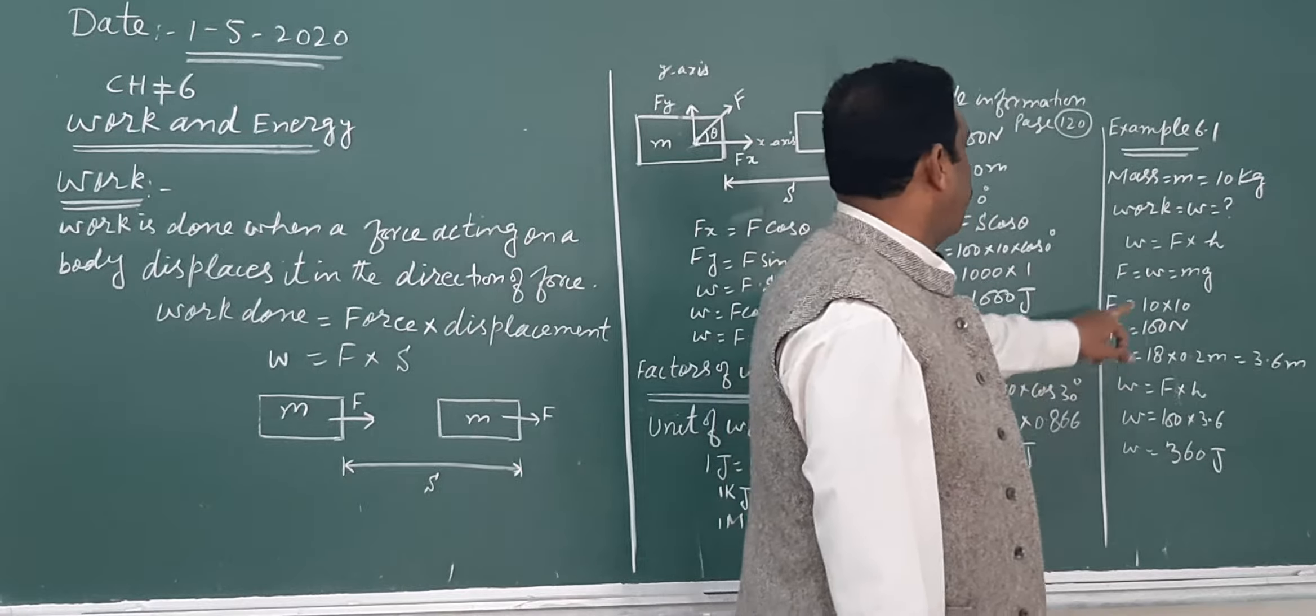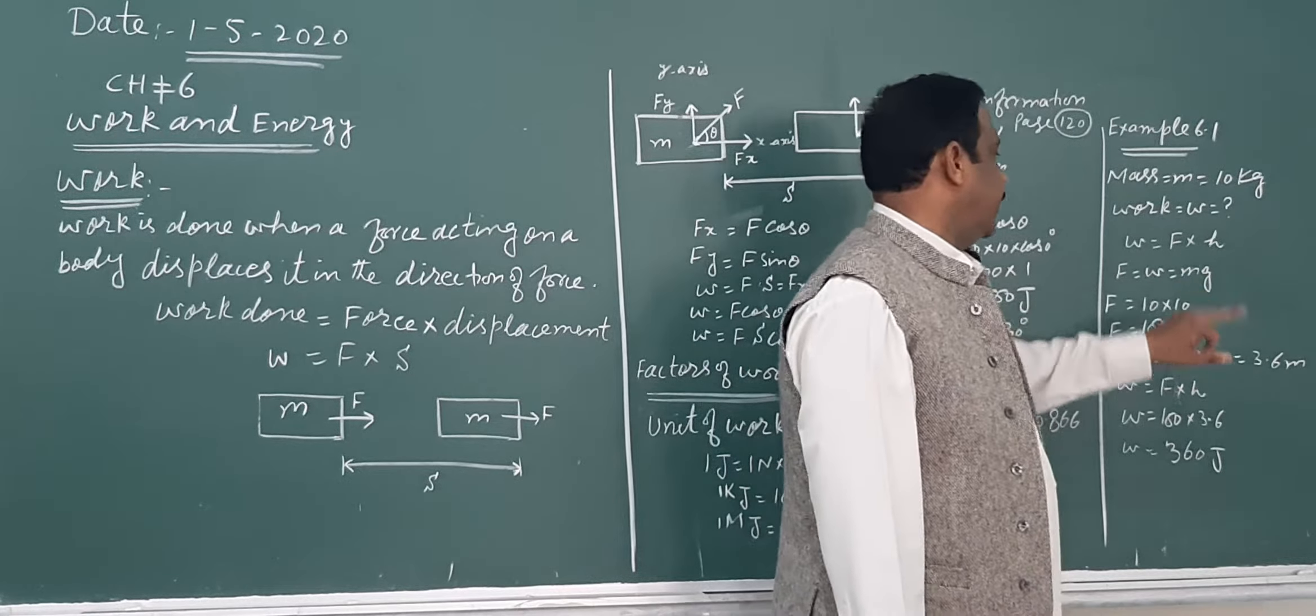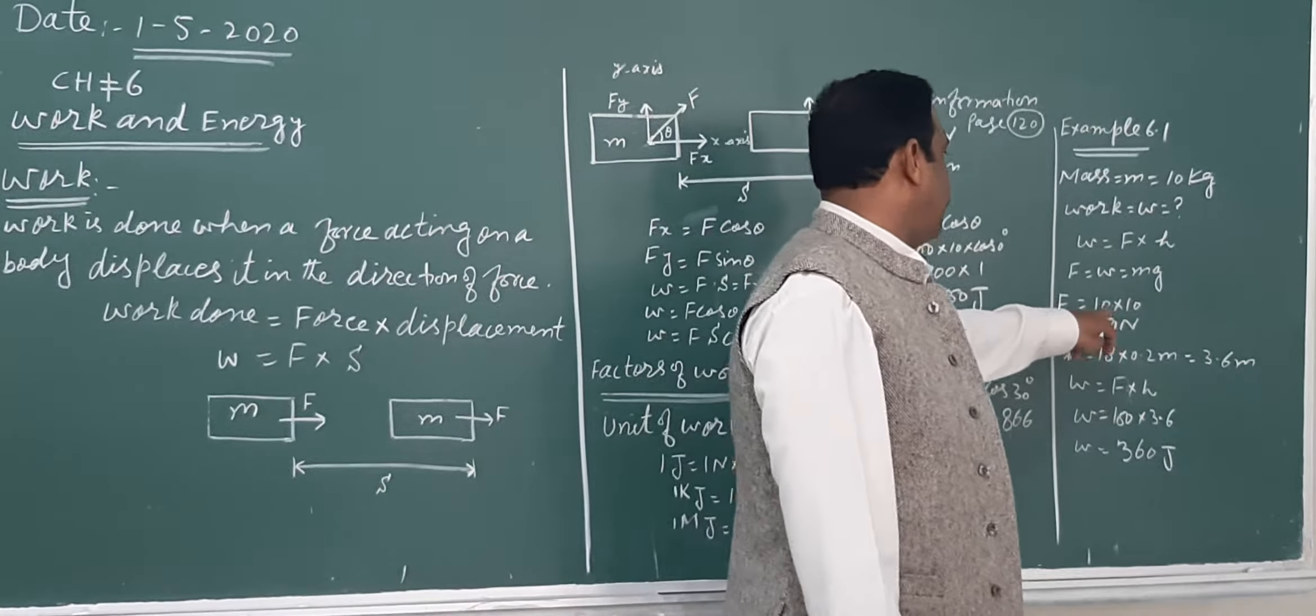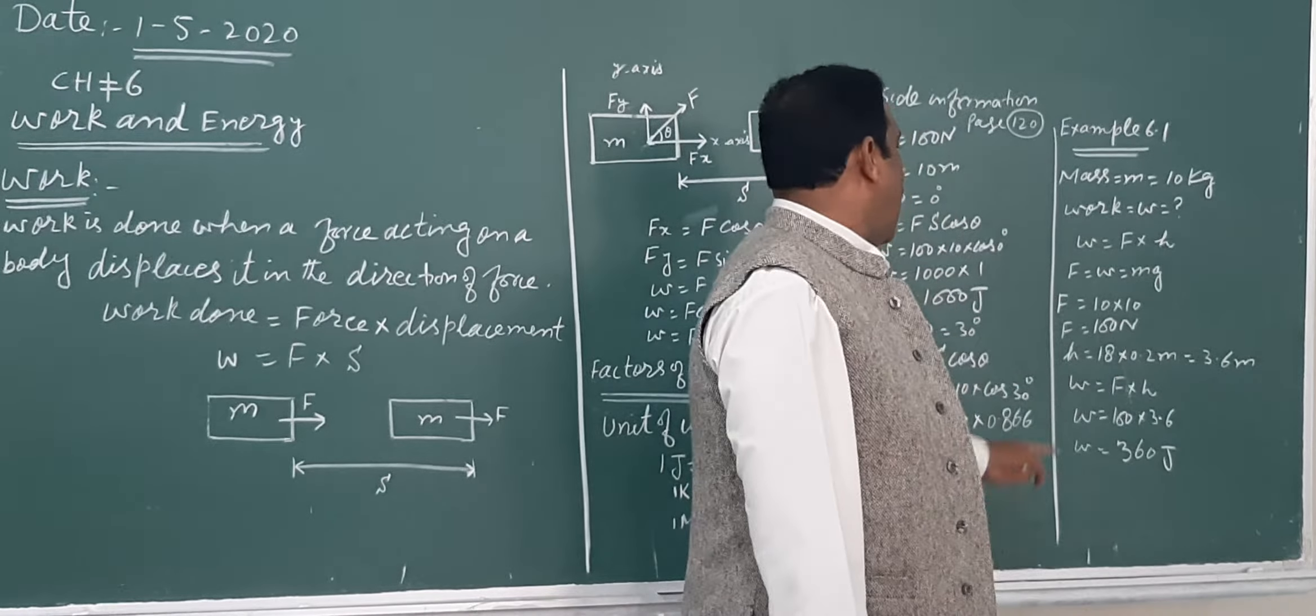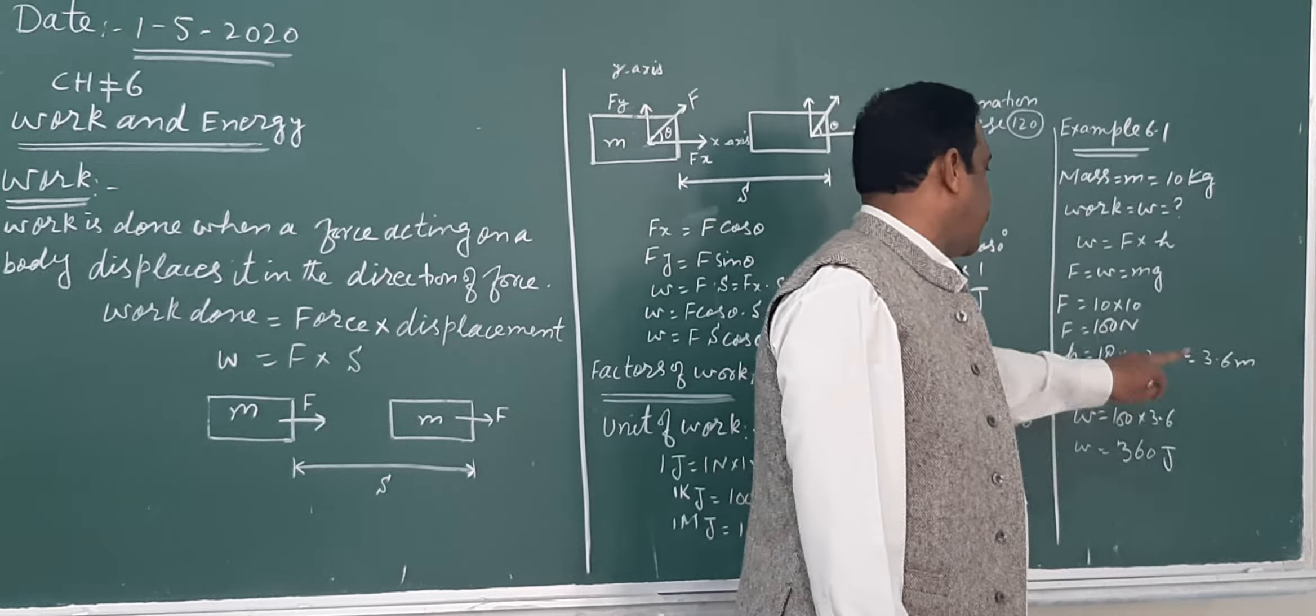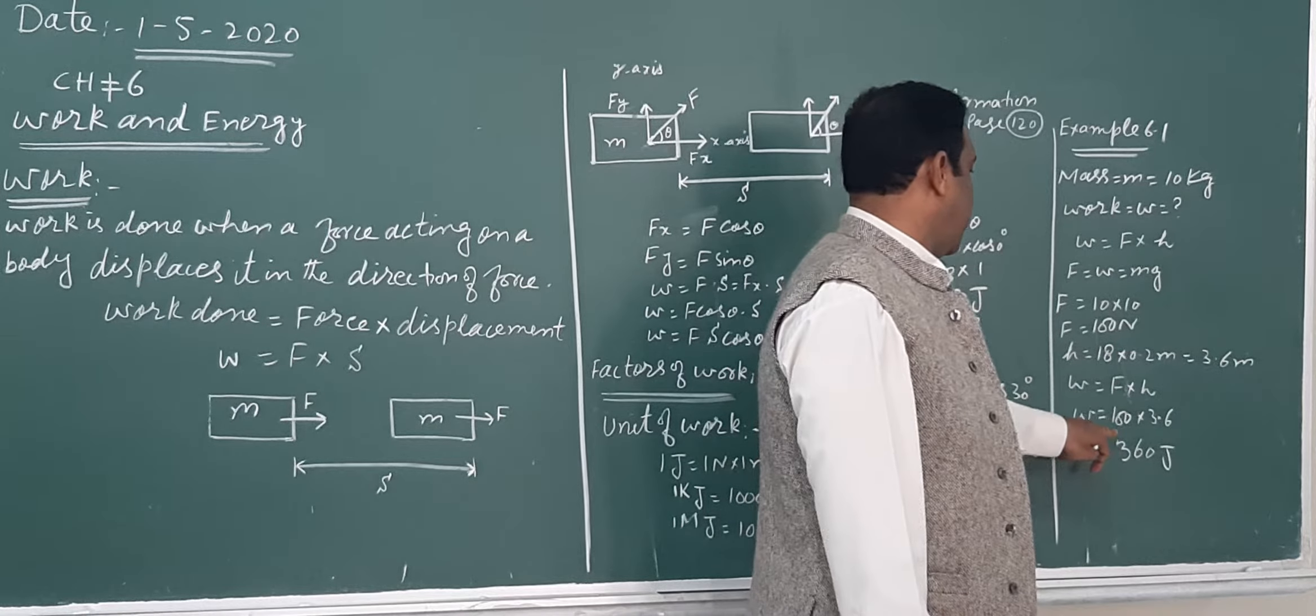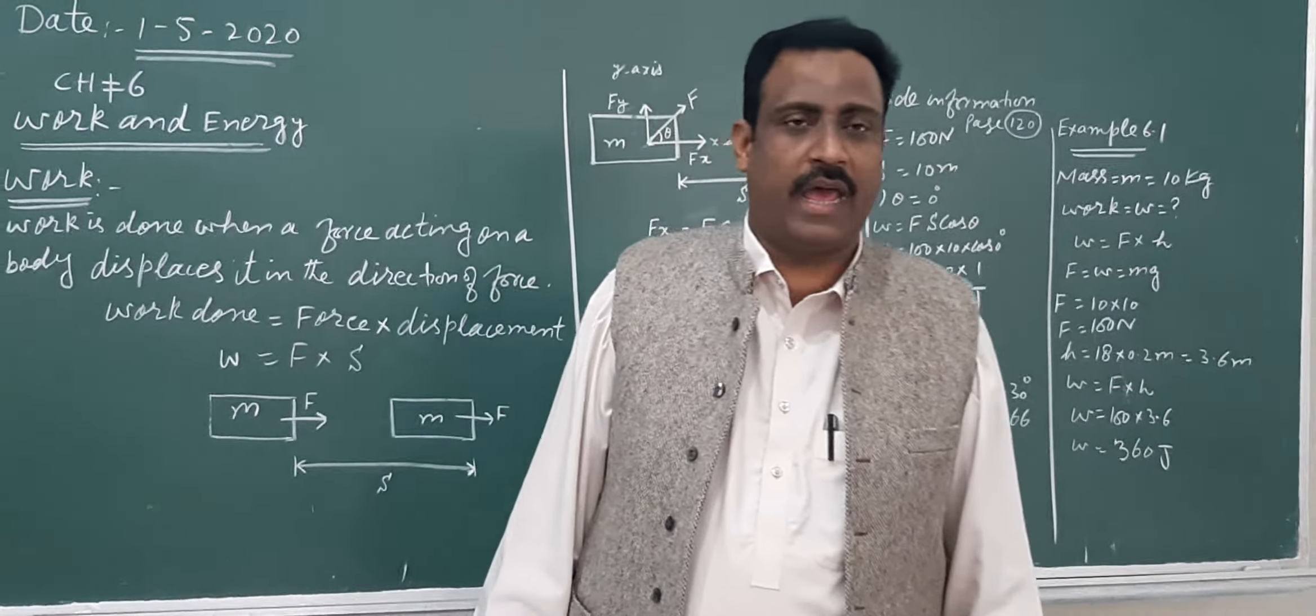We need to find force and height. Force equals weight = mg = 10 × 10 = 100 Newton. Height = 18 steps × 0.2 meters = 3.6 meters. Work done = Force × height = 100 × 3.6 = 360 joules.